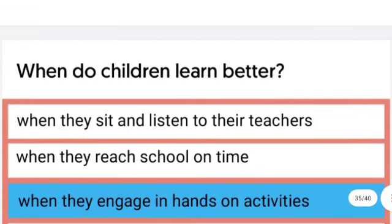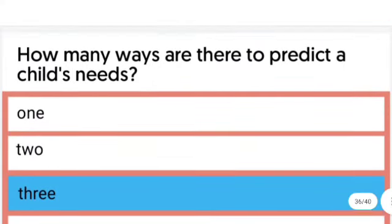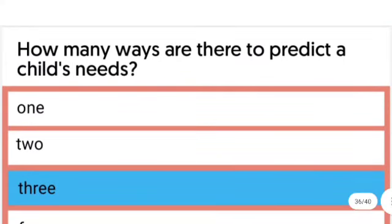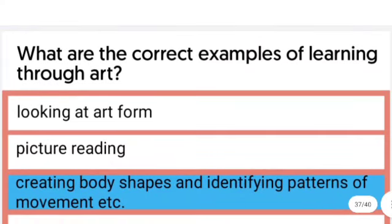When do children learn better? The right answer is when they engage in hands-on activities. How many ways are there to predict a child's need? The right answer is three.